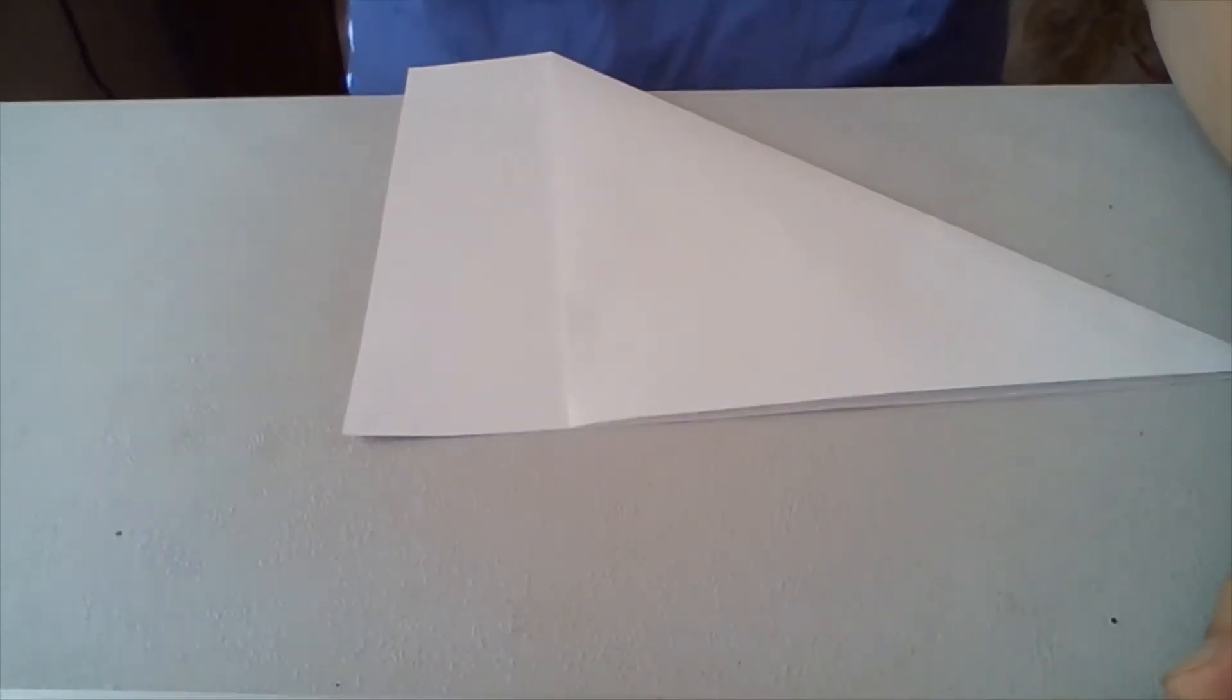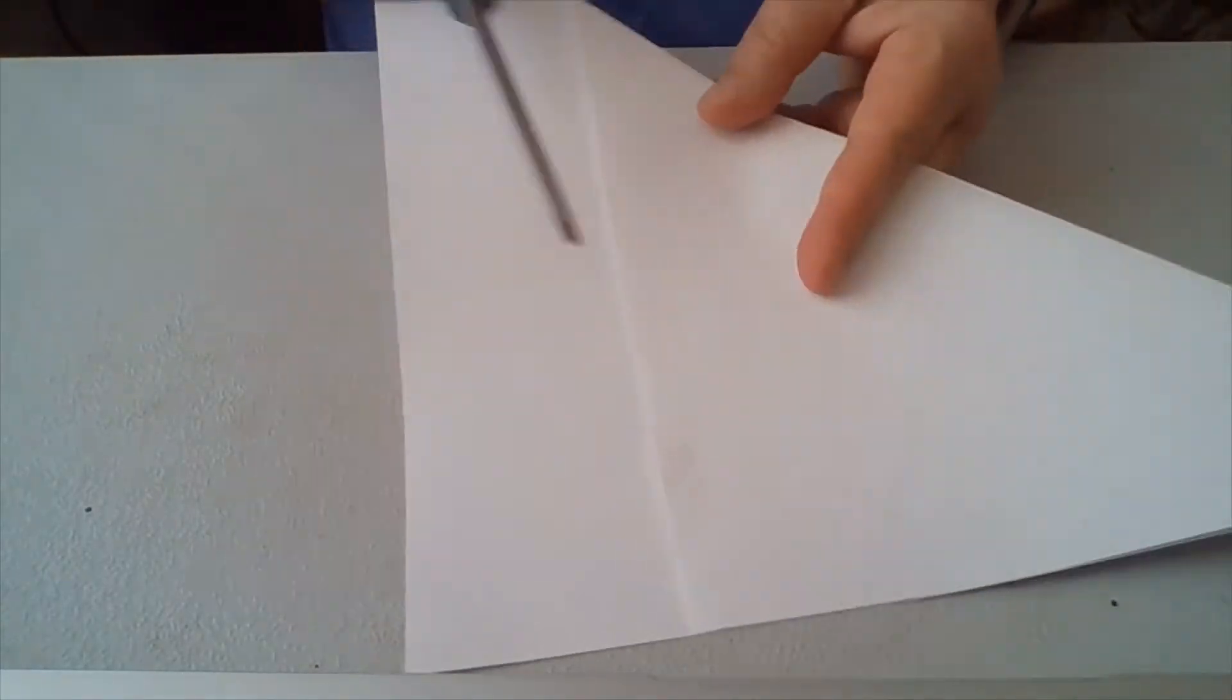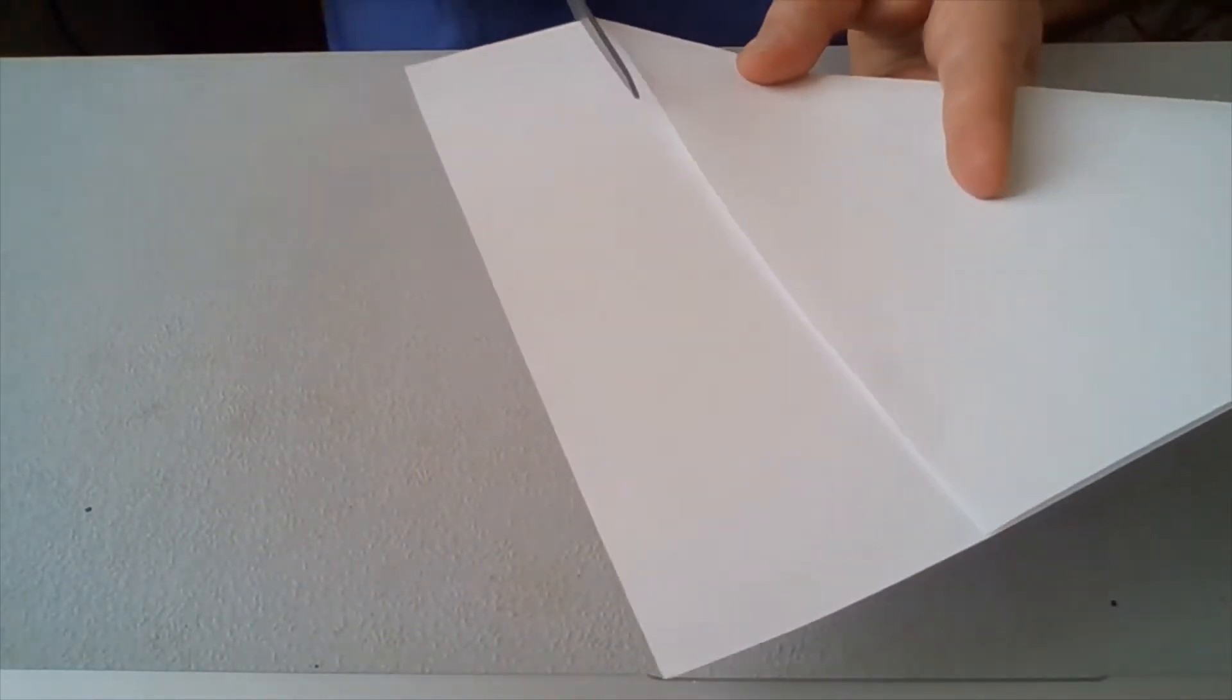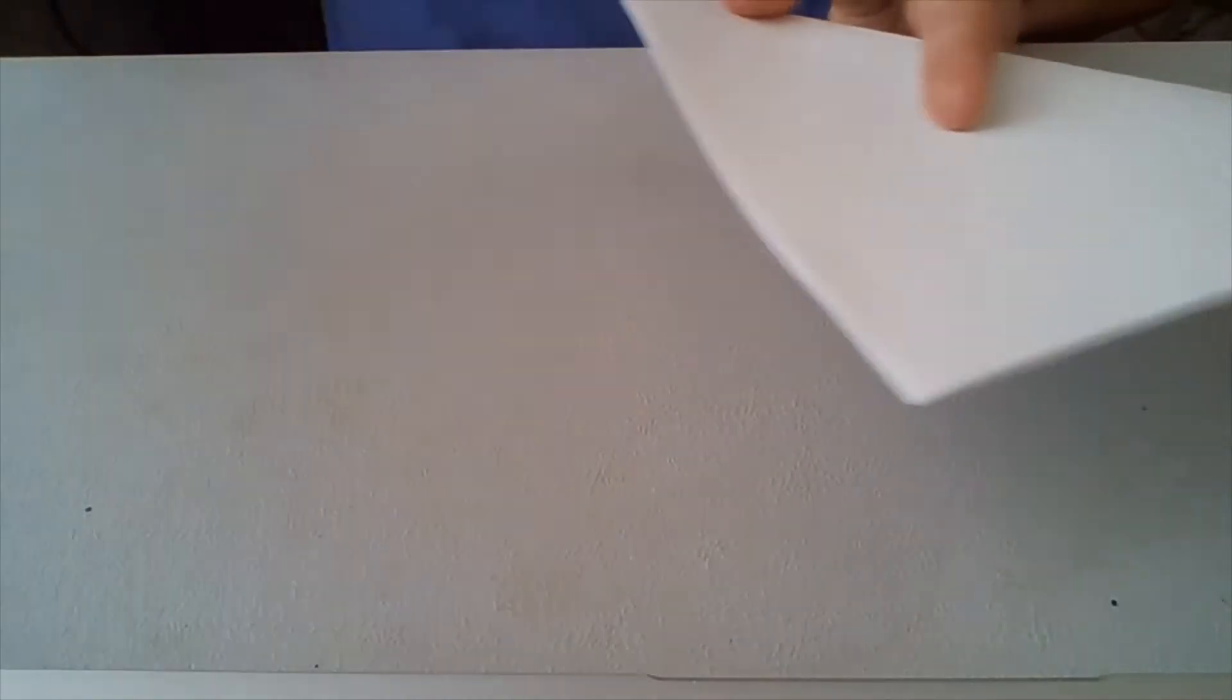So we have that triangle there. And then I'm going to use my scissors to cut off what I like to call the bookmark and save it for later use for something else. And now we have what looks like a triangle, but in fact, it's a square if you open it up.